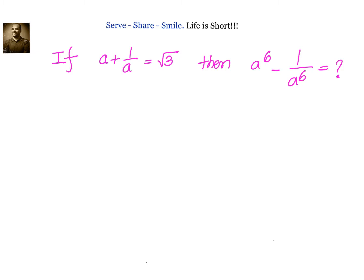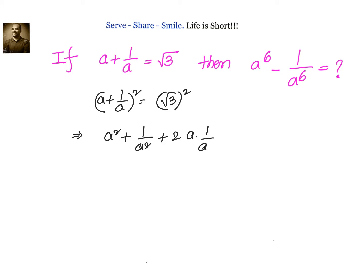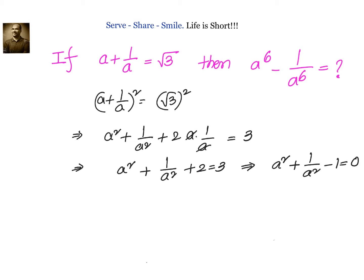We will have (a + 1/a)² = (√3)², which gives us a² + 1/a² + 2·(a·1/a) = 3. Now a and 1/a cancel, so we have a² + 1/a² + 2 = 3, or we can write a² + 1/a² - 1 = 0.